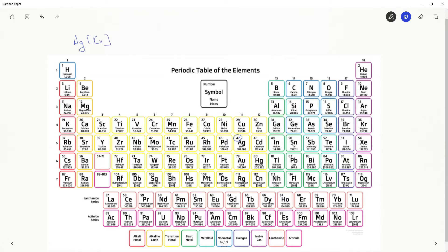Krypton coming down to period 5, 5s 1, 2, 4d 1, 2, 3, 4, 5, 6, 7, 8, 9.